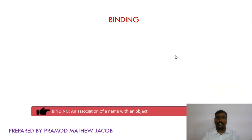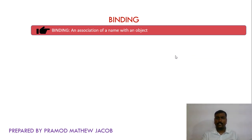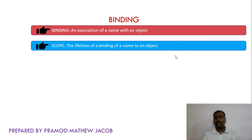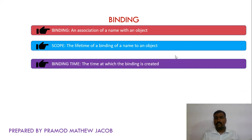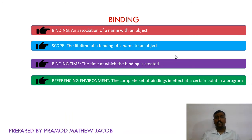Next, let's see what binding is. Binding is the association of a name with an object. In the previous example, the name age is associated with memory addresses up to 2003, and the value 21 is associated with the name age. Scope is the lifetime of a binding of a name to an object — that is, how long the name is mapped to that particular object. We will learn about static scope and dynamic scope in upcoming sessions. Binding time is the time at which a particular binding is created — when the association between a name and an entity is established. The referencing environment is the complete set of bindings in effect at a particular point in a program.